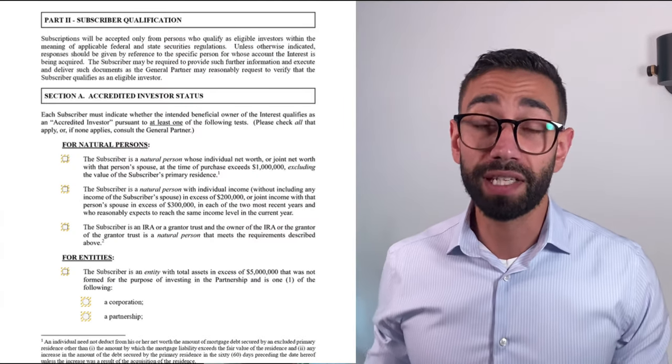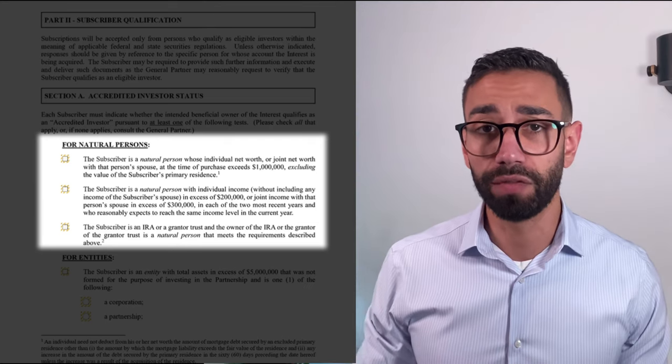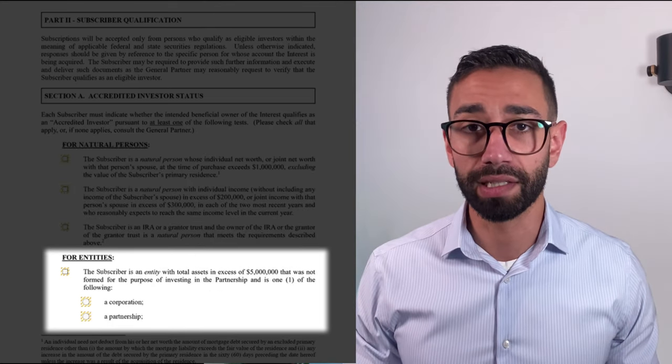So what is onboarding automation? The idea is that every LP should be able to complete the documents on autopilot without your team having to be involved. Think of it as an automated virtual conveyor belt that guides them through the appropriate steps, depending on whether they are an entity, an individual, applying jointly, or using a trust. For example, if the investor is an entity, certain sections don't need to be filled out, but others do.